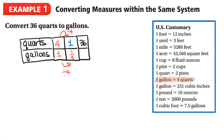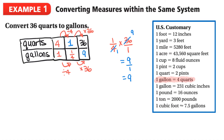Now that I have one, I multiply by 36 on both top and bottom. I have one over four times 36 over one. Looking at the diagonals, both 36 and four can be divided by four, giving me nine over one, which is just nine. So 36 quarts is equal to nine gallons.